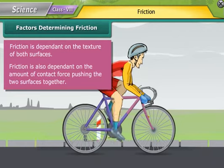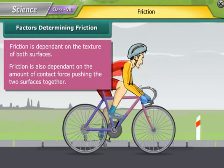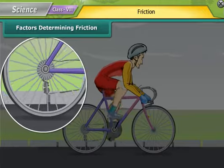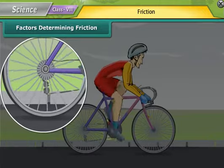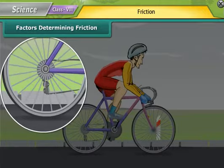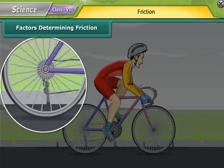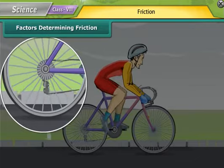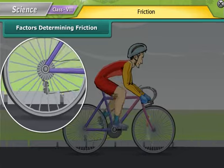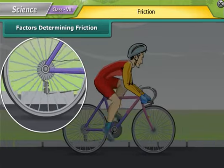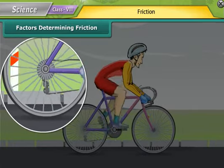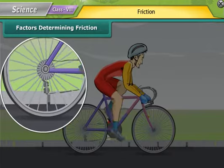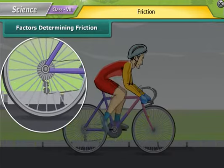While in motion, the tires of the bicycle are rubbing against the surface of the road. When two surfaces rub on one another, a force comes into play. This force acts in the direction opposite to the direction of motion. Thus, it slows down the motion and finally brings the moving object to a stop.